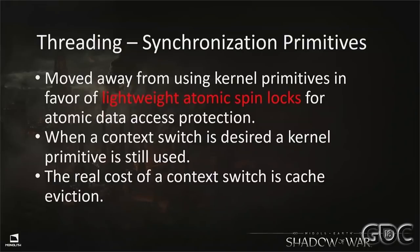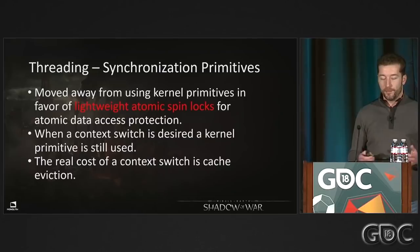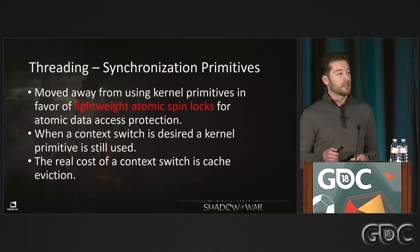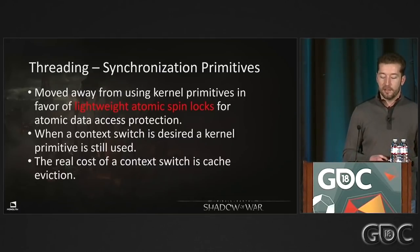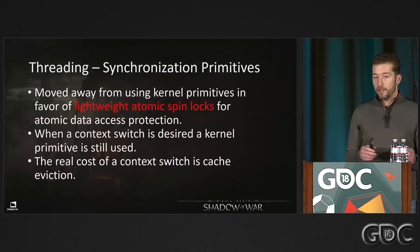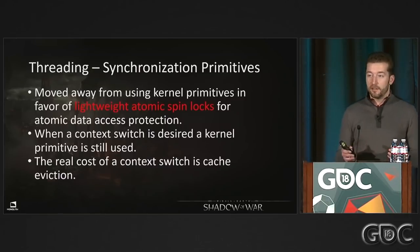One important thing we introduced in Shadow of Mordor was lightweight atomic spin locks. We moved a lot of our systems from kernel primitives like critical sections to atomic spin locks for data access protection. In most cases, there's no contention on those spin locks. What we're really trying to avoid is a context switch, because context switches are very expensive — not just for saving/restoring registers, but because the caches get evicted and you pay cache miss costs all over again. We still use kernel primitives when we actually do want a context switch.